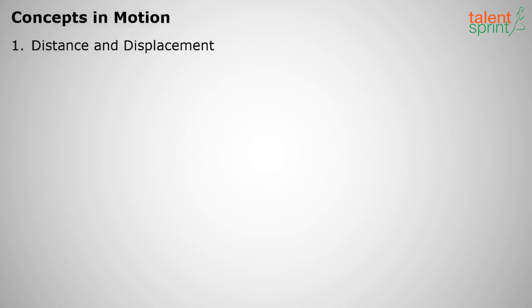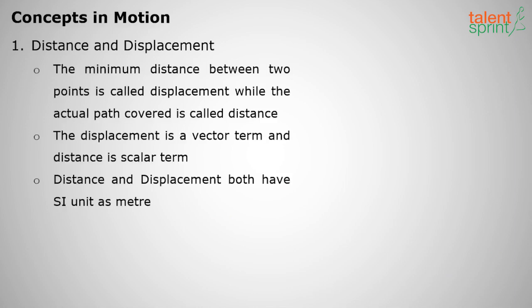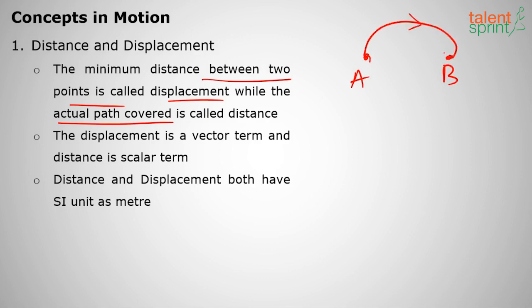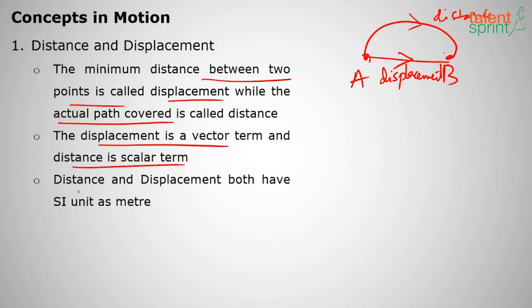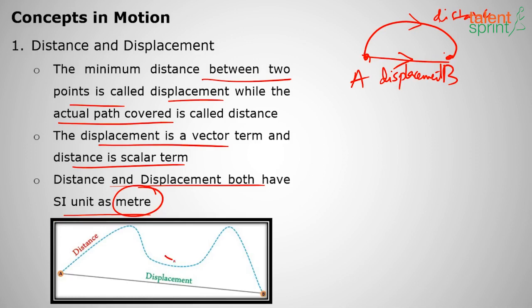The different concepts in motion include distance and displacement. The minimum distance between two points is displacement, while the actual path traveled is distance. For example, moving from A to B along a longer route gives the distance, while the straight shortest path is the displacement. Distance is a scalar and displacement is a vector. Both have the SI unit of meters, and in the CGS system the unit is centimeters.